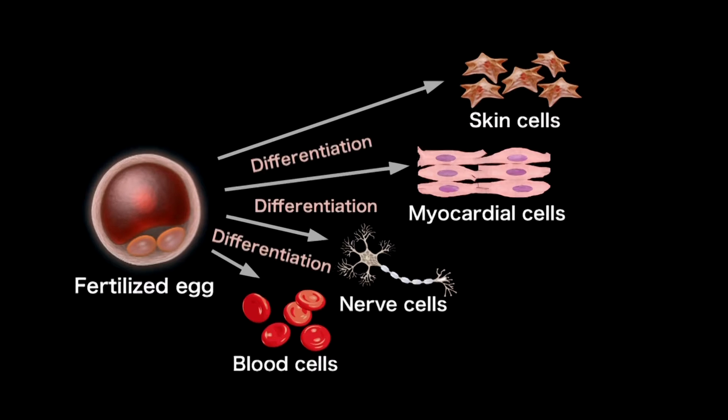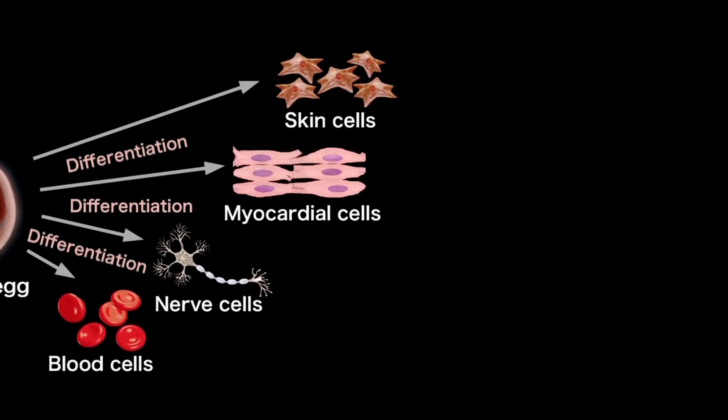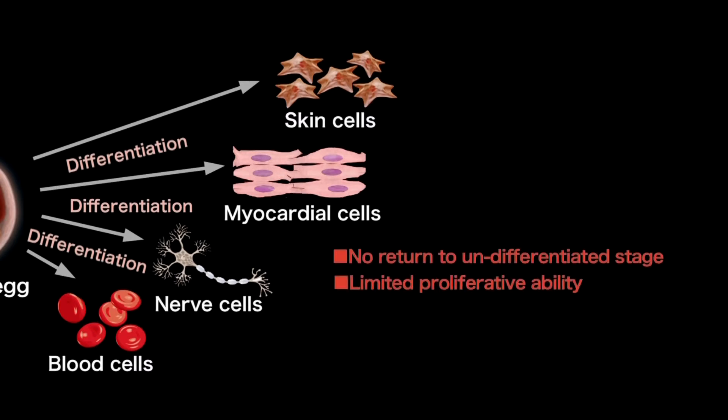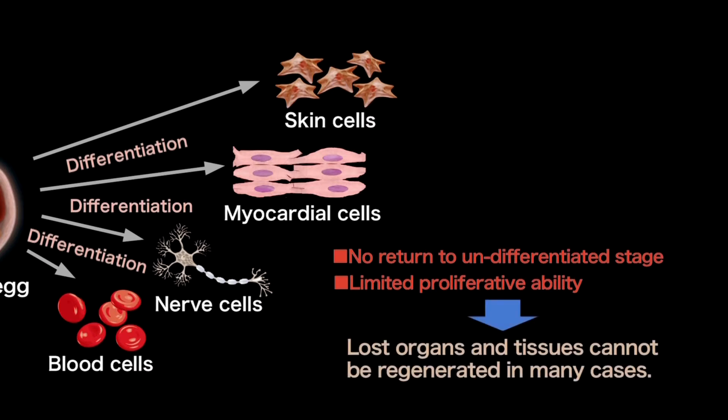A cell which has differentiated once in the body will never return to its undifferentiated stage, and its proliferative ability is also limited. This means that organs and tissues that are lost or damaged due to accidents or diseases cannot be regenerated in many cases.